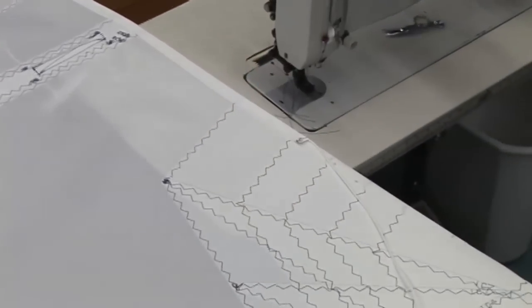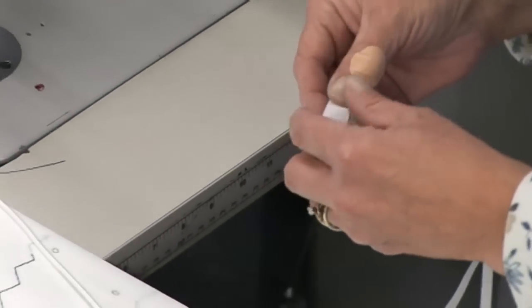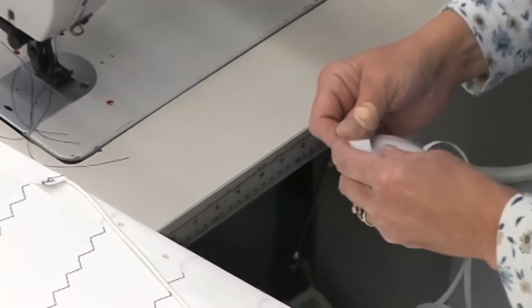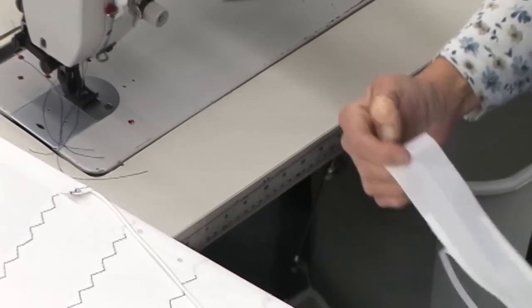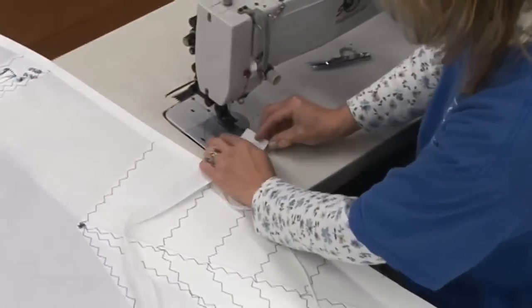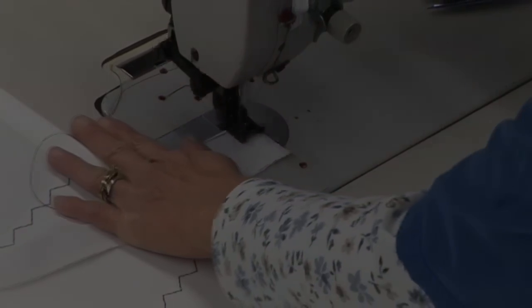We'll now take a second length of Dacron tape and create a hem on the end of it. Same procedure. We'll sew the hem prior to installing the tape to the edge.